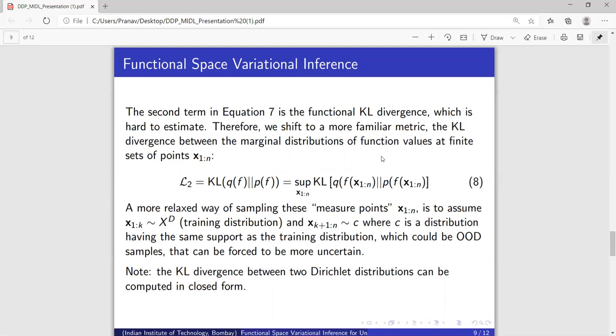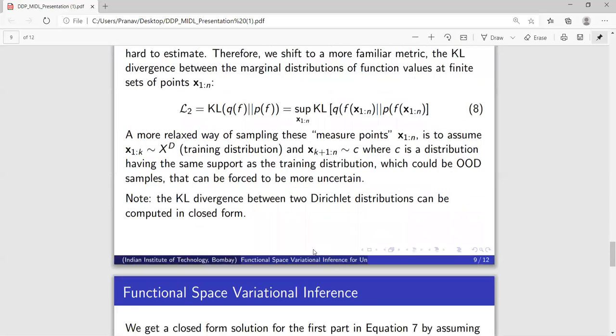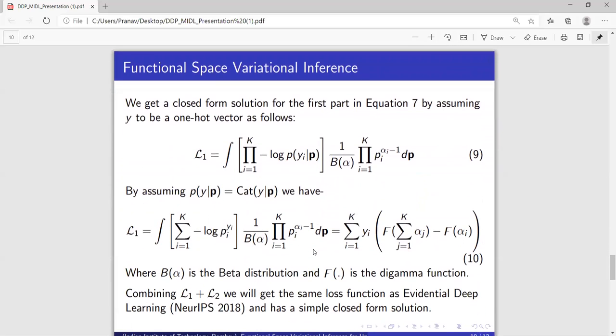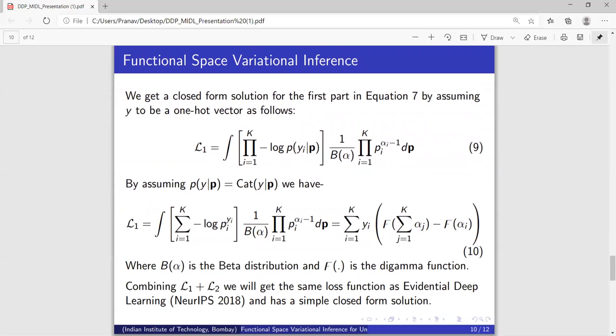Now since our marginal distribution is nothing but Dirichlet distribution, this L2 term can be computed in its closed form. KL divergence between Dirichlet distributions can be computed in its closed form. So L2 has a closed form solution. Now the first term is nothing but the expected cross entropy, which again has a closed form solution.